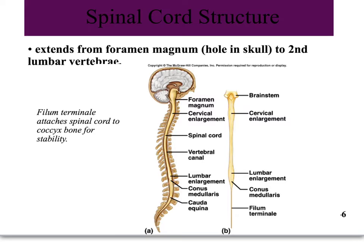The spinal cord extends from the foramen magnum, which is the hole at the base of the skull where the cord exits. Right below the medulla the cord begins, and it travels to the second lumbar vertebrae, down in the lumbar enlargement. The skinny tail part down here, the filum terminale, is not really part of the cord — it's an attachment to stabilize the cord, attaching it to your tailbone or coccyx.